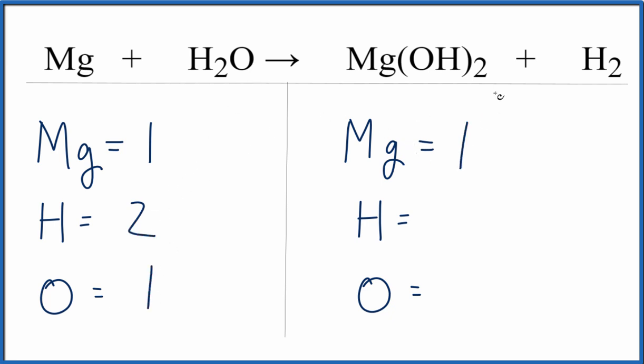Over on the products, we have one magnesium. This two applies to everything in parentheses. So we have two times the one, two hydrogens. And we have to count these hydrogens here as well. So we have two plus two, four hydrogen atoms, and then the two times the one, two oxygen atoms.